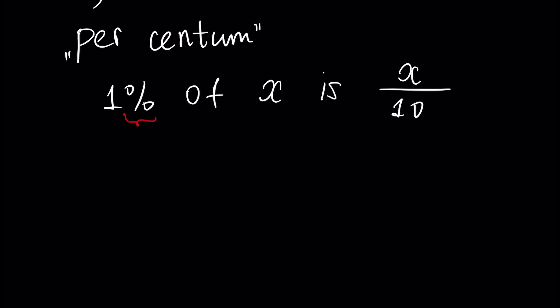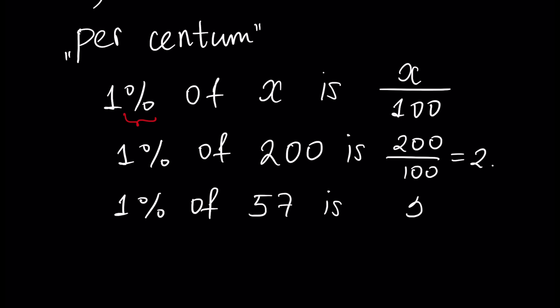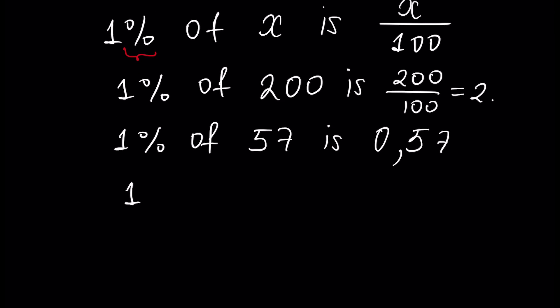For example, 1% of 200 is 200 divided by 100, which is 2. 1% of 57 is - if we divide 57 by 10 we have 5.7, and if we divide by 100 we have the floating point here and we put 0, so this is 0.57.